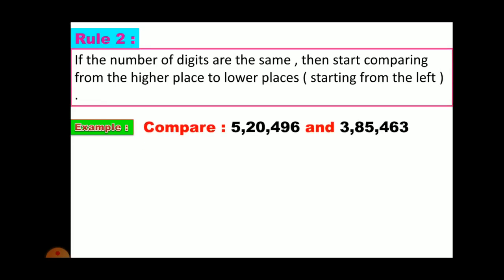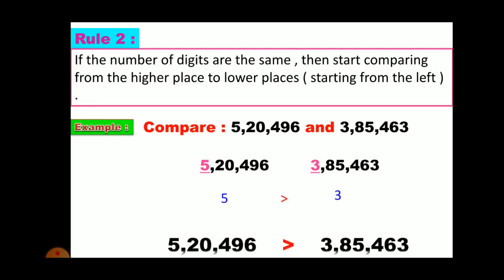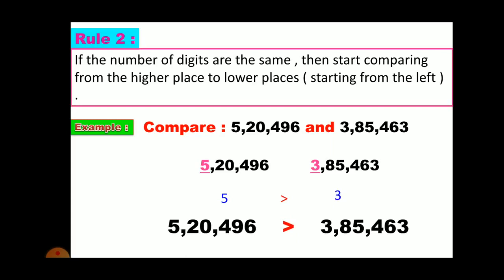we have 5,20,496 and 3,85,463. As you can see, the first digit is 5 and 3. So, 5 is greater than 3. The answer will be 5,20,496 is greater than 3,85,463.